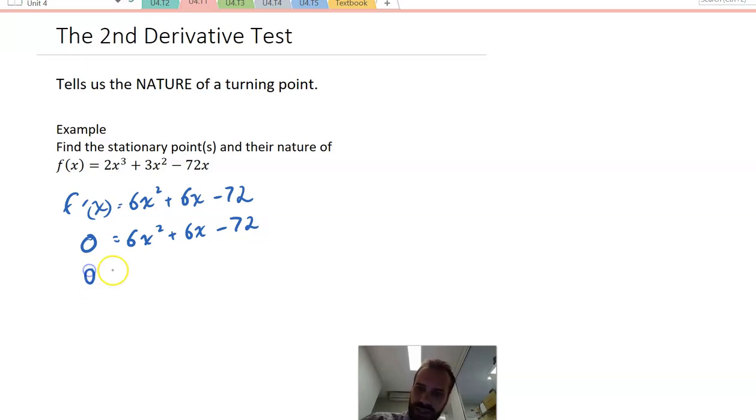Now it's going to be easier if I factor the 6 out of this, like that, and divide by 6. Zero divided by 6 is still zero. So now I have zero equals x² plus x minus 12.